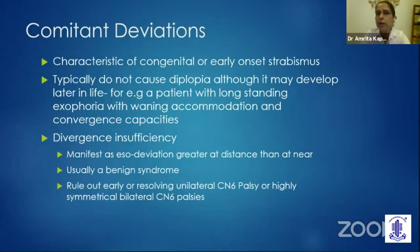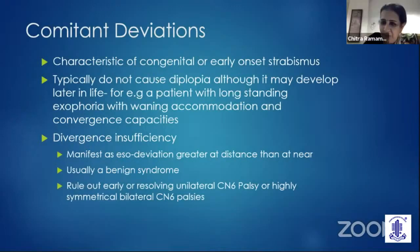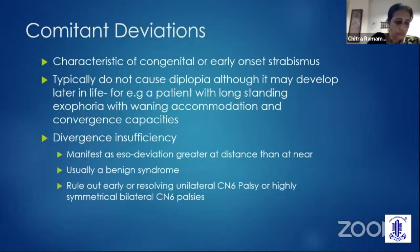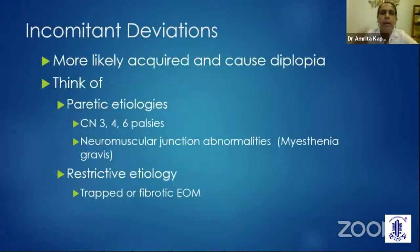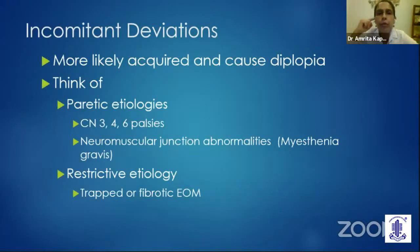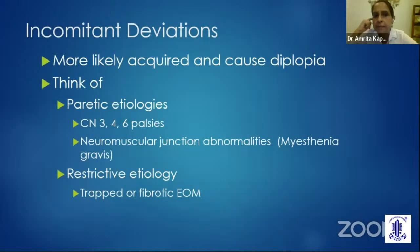Divergence insufficiency is usually a benign syndrome. However, we have to rule out a resolving sixth cranial nerve palsy in one eye or a highly symmetrical bilateral cranial nerve palsy, which may give rise to a picture like divergence insufficiency. If a patient has an incomitant deviation, it is most likely acquired and we have to find the cause — cranial nerve palsy of the third, fourth, or sixth nerve, neuromuscular junction abnormality causing diseases like myasthenia gravis, or a restrictive etiology like a trapped or fibrotic extraocular muscle.